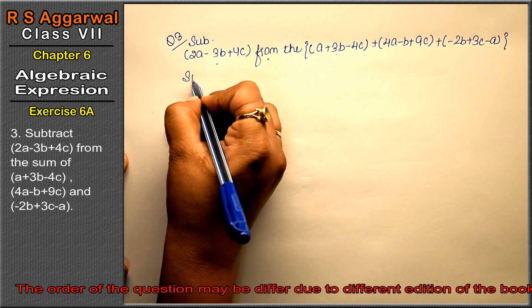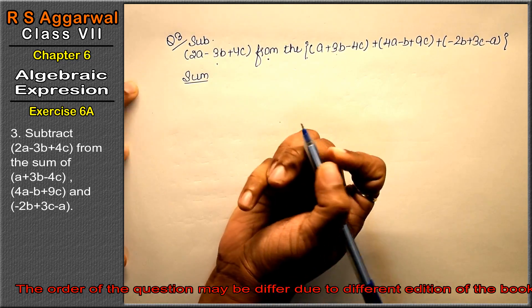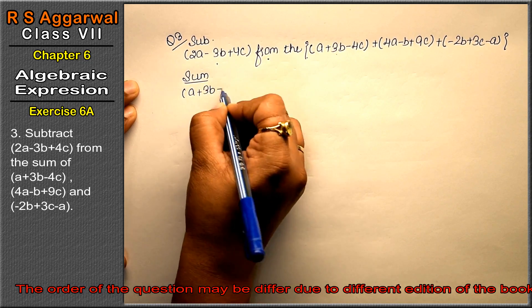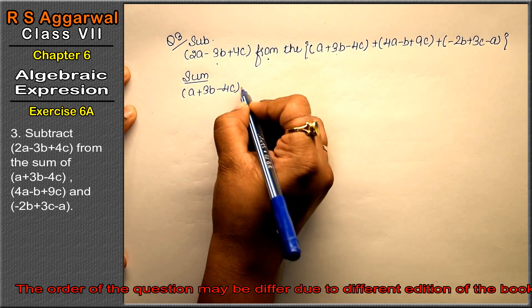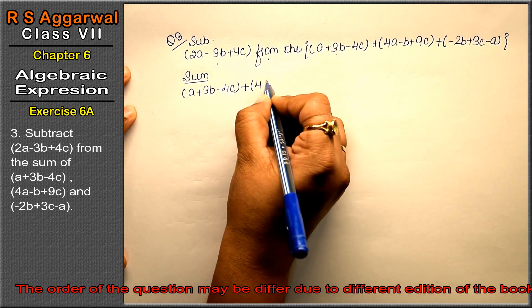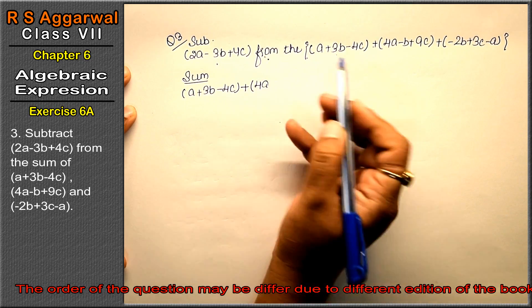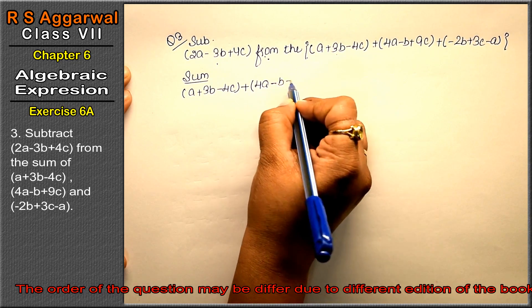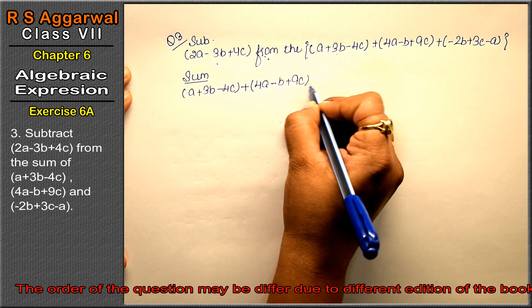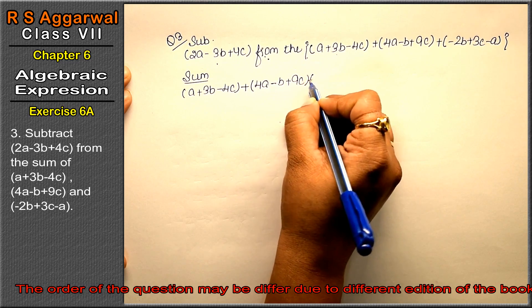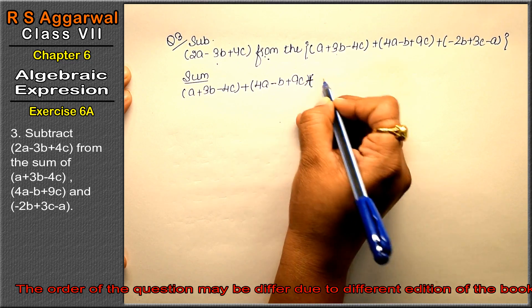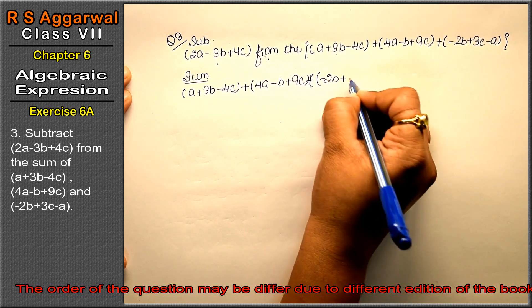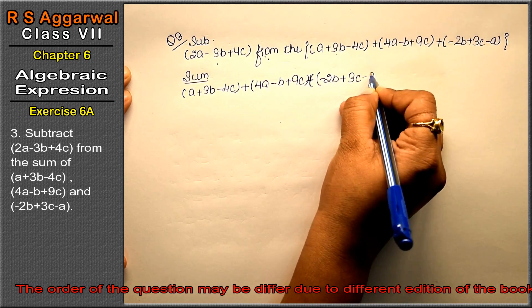So we will find the sum. Let me write: a plus 3b minus 4c plus. You know, I know that we write the expressions after 'from' first. So, minus b plus 9c plus, sorry, minus 2b plus 3c minus a.